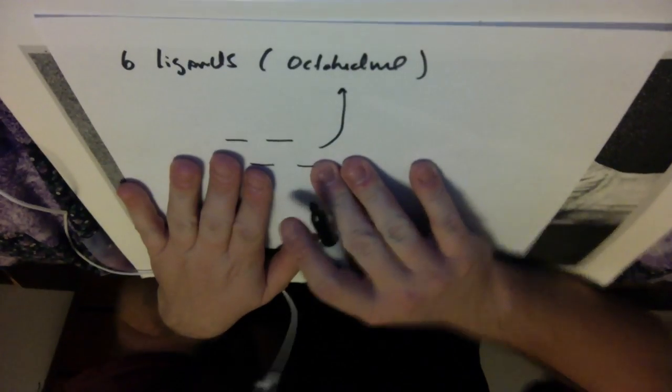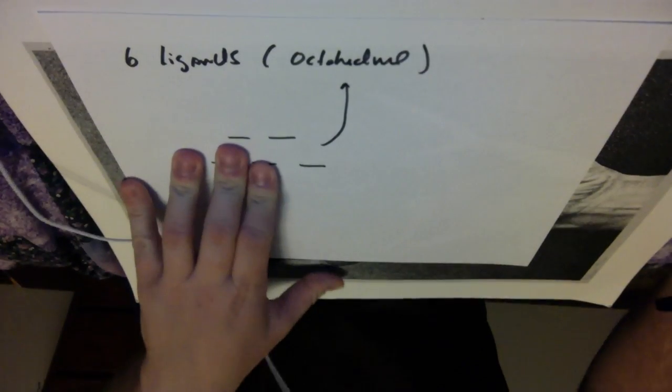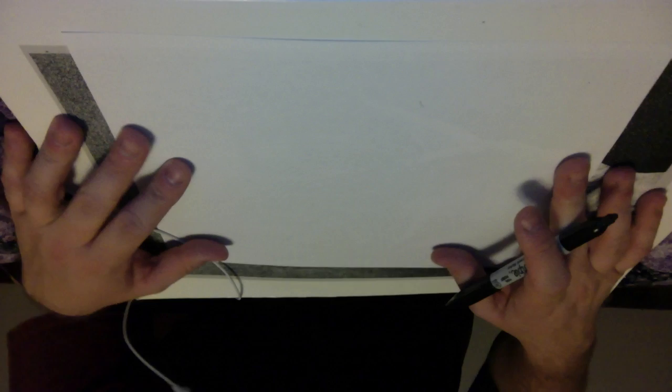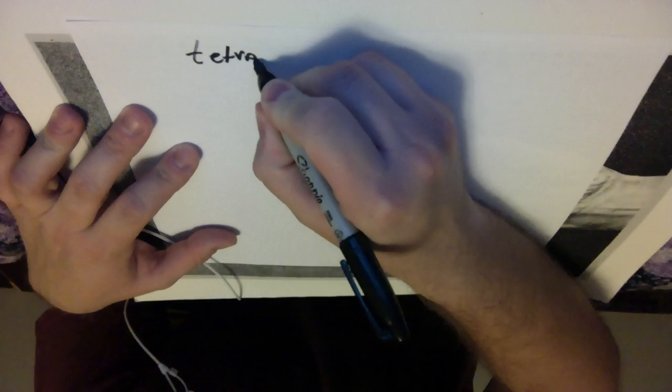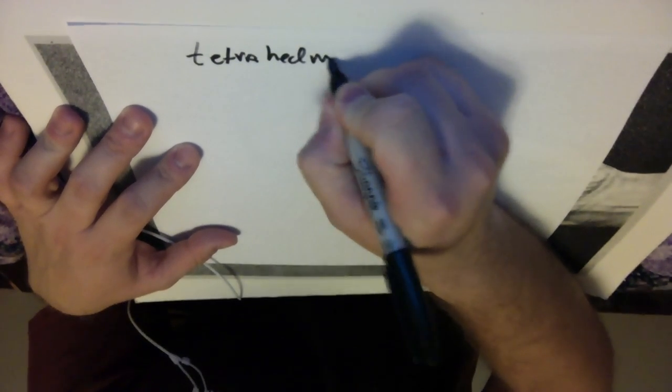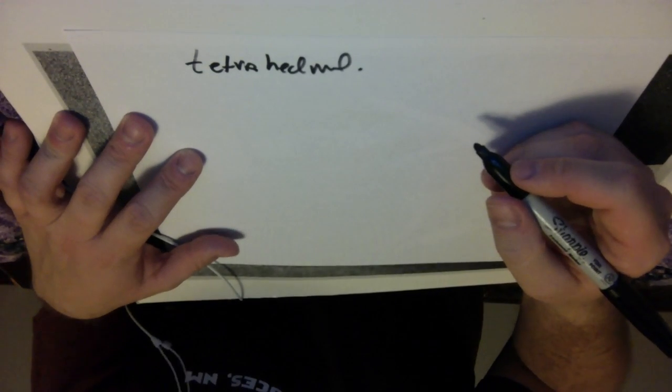Now, there are some exceptions to this, and the first exception that I want to talk about to that rule is a geometry known as tetrahedral, tetrahedral geometry.